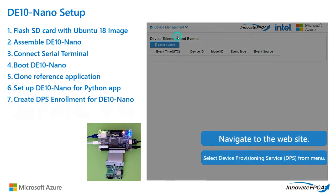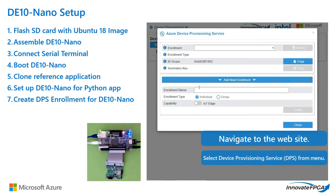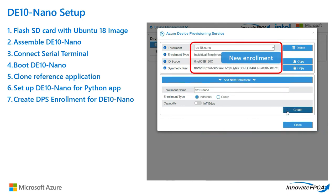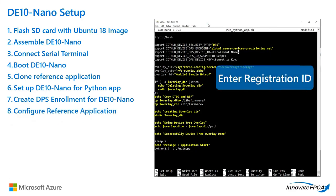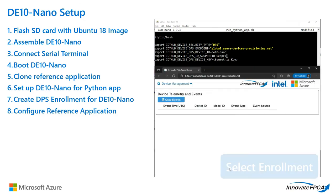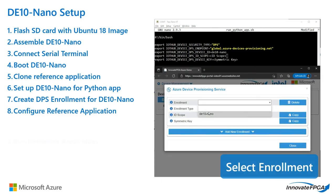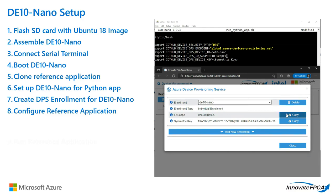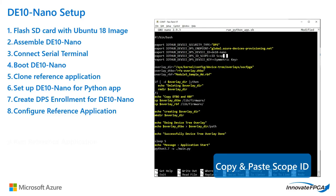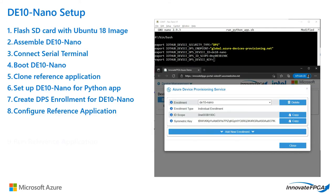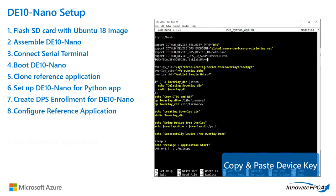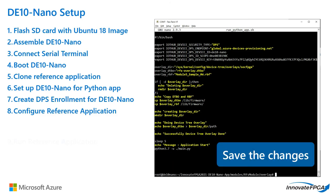The reference application and the IoT solution must be configured so they can establish secure communication. This process is called device provisioning. You must register the device to an IoT solution. The reference application uses this registration information to establish secure communication to the IoT Hub. Take the enrollment information from the web application UI to the reference application and click Save.